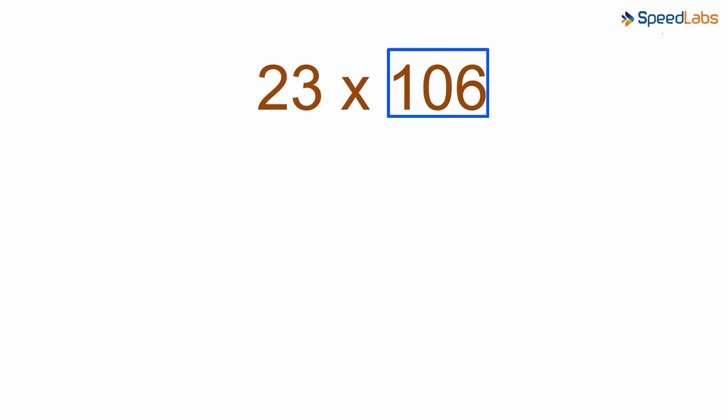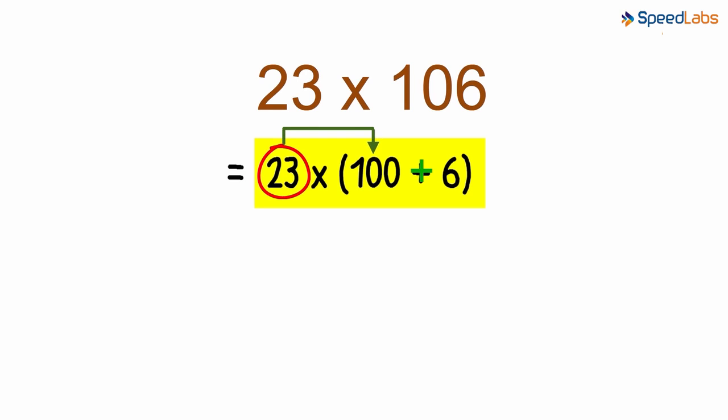We know one hundred and six can be written as one hundred plus six. Therefore, we can start our solution by writing the expression like this. What does it indicate? Here we need to multiply twenty-three with one hundred and with six.